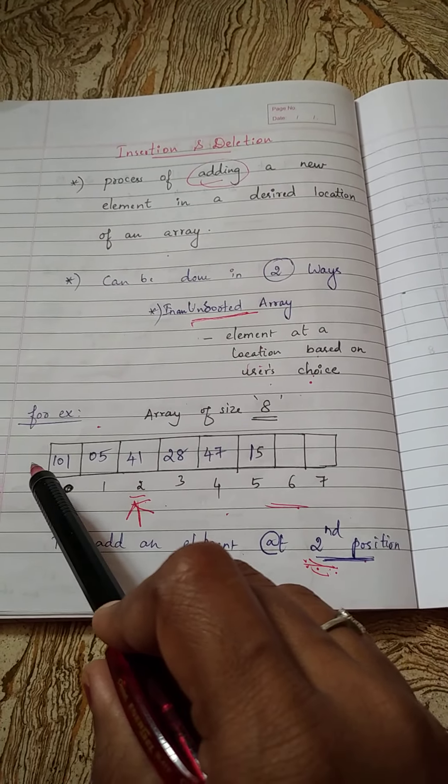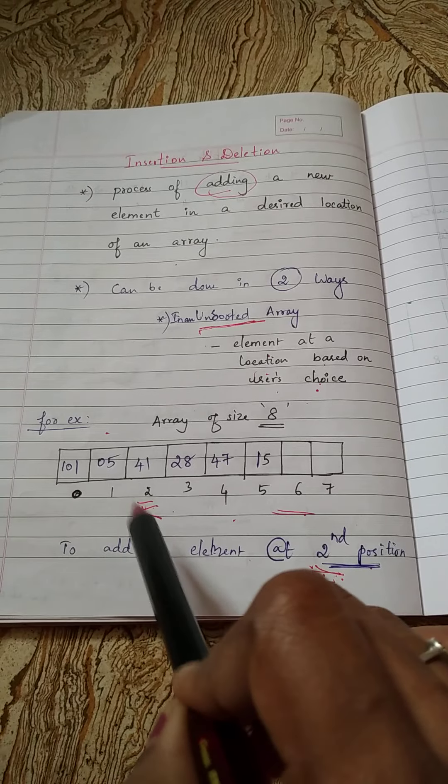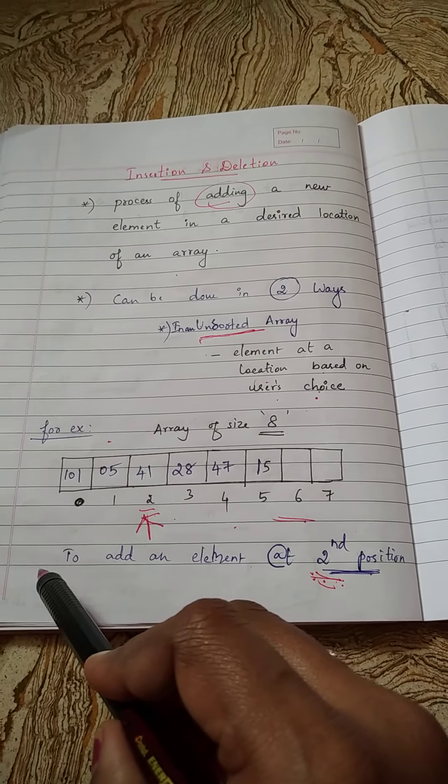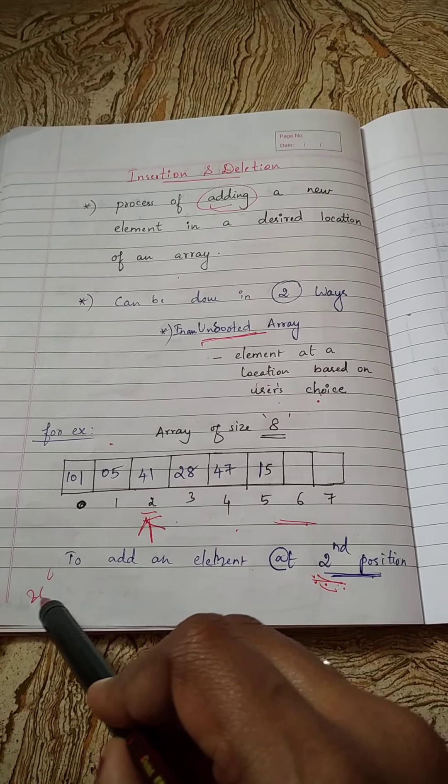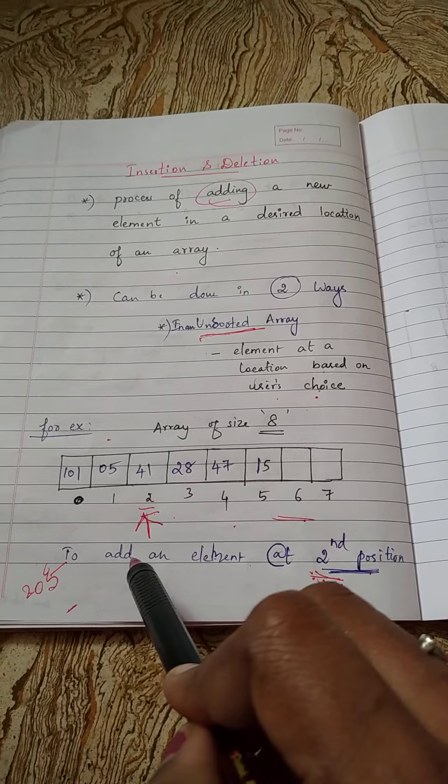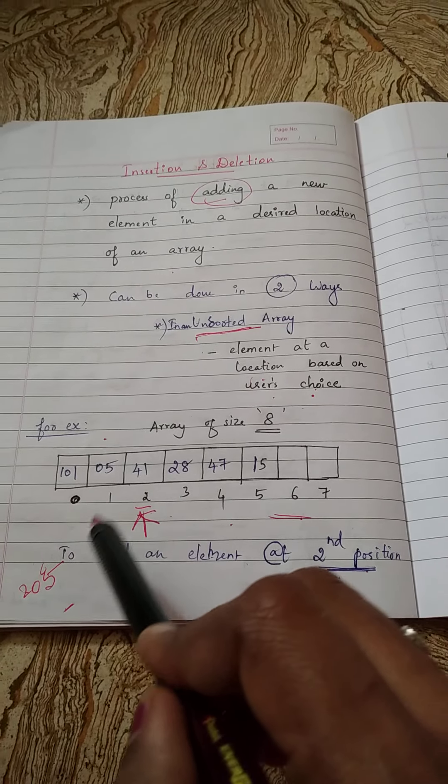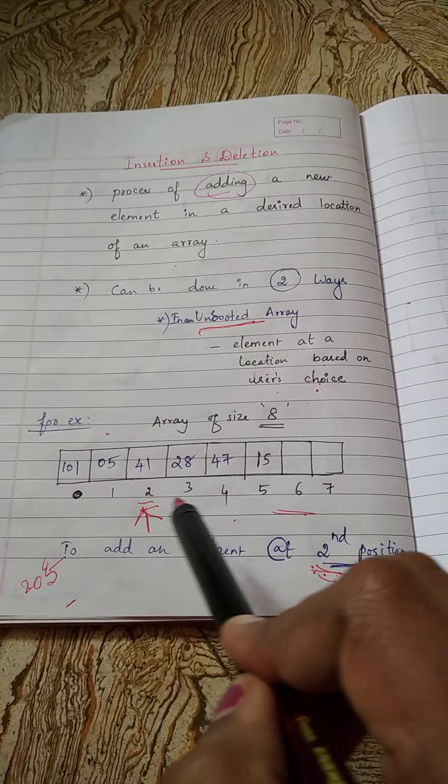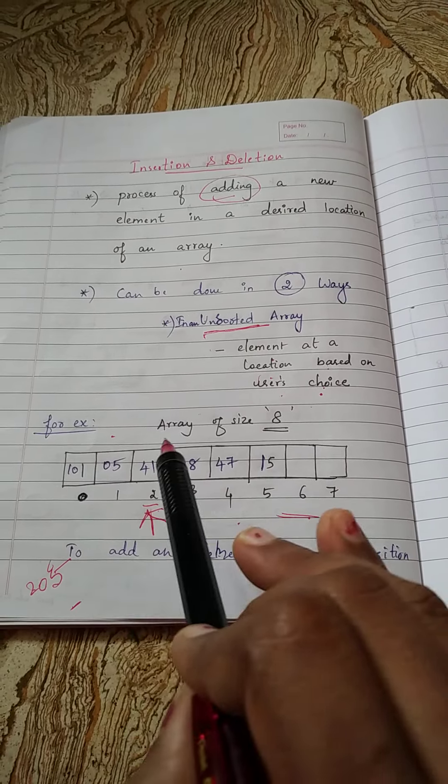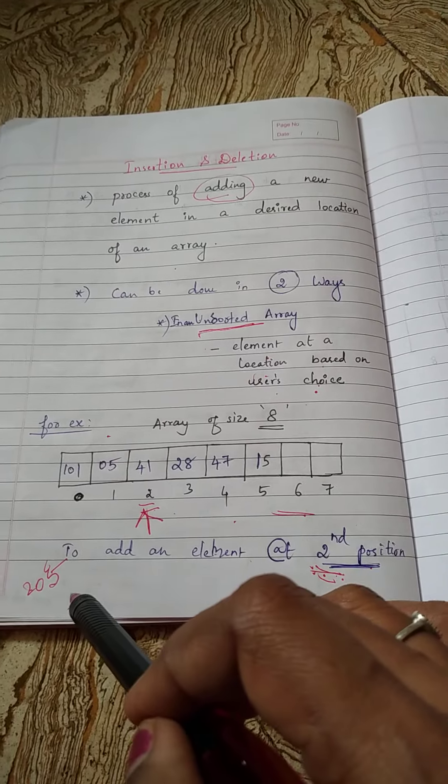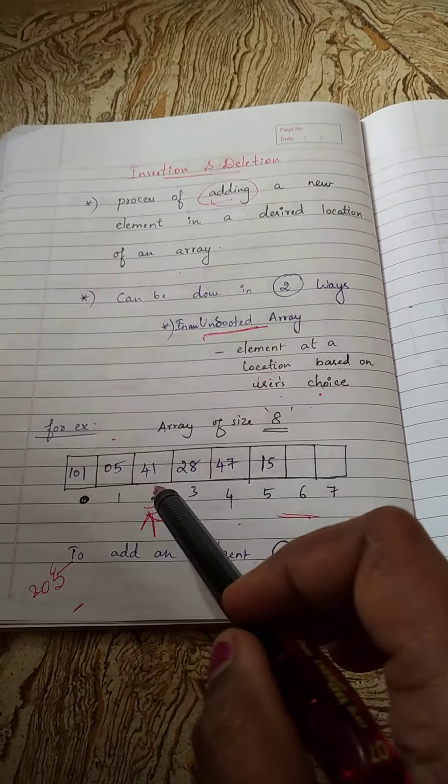for example a is an array name, so a of 2 is equal to, for example the new element to be added is 205. You want to insert 205 in position 2. Now if you directly try a of 2 equals 205, what happens? Then 41 will be overwritten with 205, so 41 will get deleted and 205 will be added in this position.